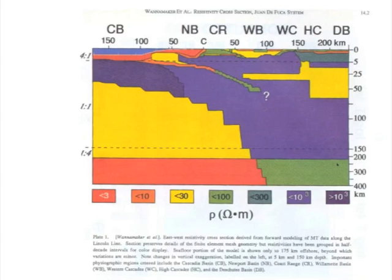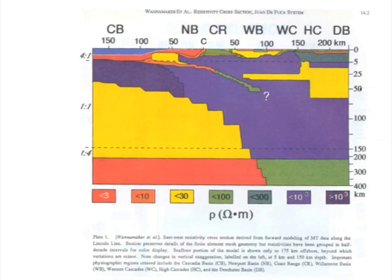This is the kind of section that magnetotelluric workers like my colleague Phil Wanamaker at Utah can publish. He's giving us a depth section on a log scale — starting at zero, five kilometers up in the upper crust, and going as deep as 400 kilometers into the mantle. This is a line that crosses the Cascadia subduction zone — offshore — and the skin depth he's using is great enough to penetrate to the sea bottom.